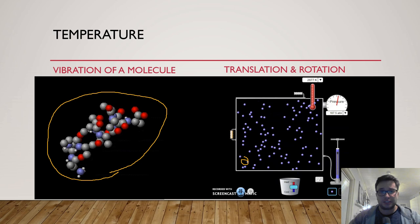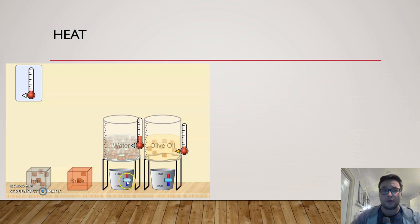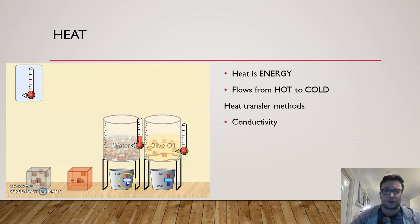In the definition of temperature we say the word energy. What is energy that is moving from one thermodynamical system to another? It's called heat. Heat is energy. Heat flows from a hot system to a cold one. It can move either by conductivity, by convection of gas or fluid, or by electromagnetic radiation.